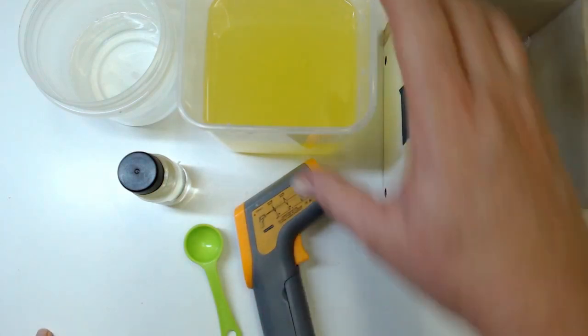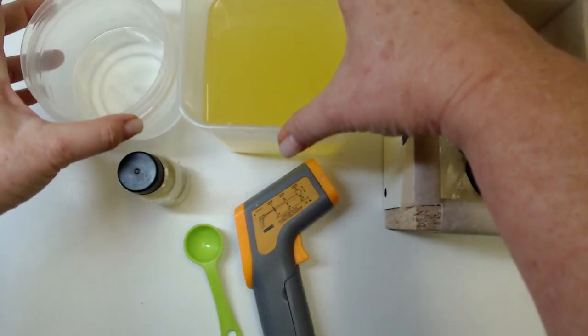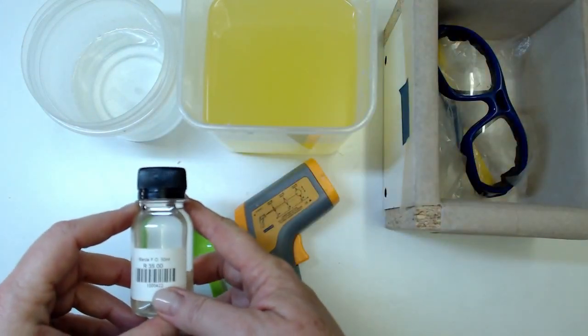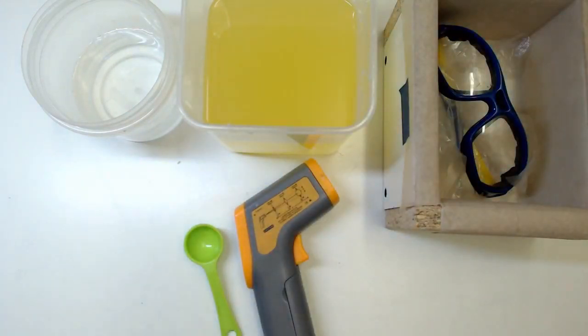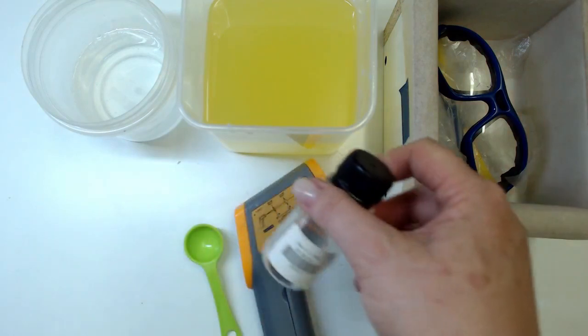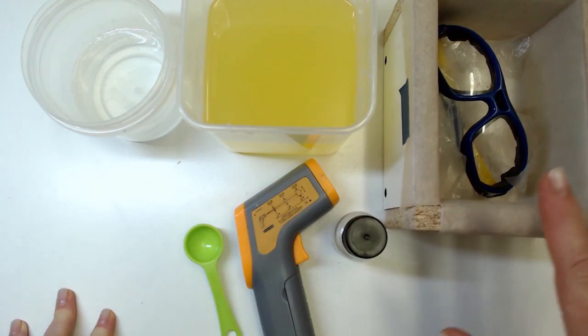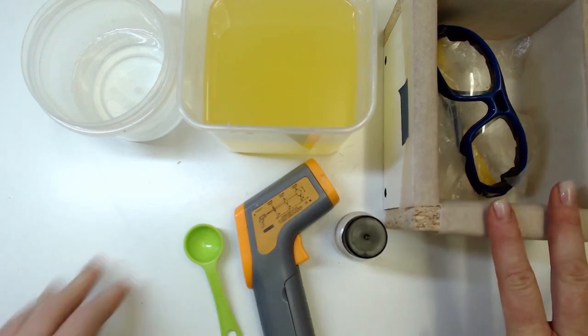But the coconut oil just boosts the bubbly a little bit and gets it to foam easier. Then I'm going to add a little bit of fragrance oil to it. I've got peppermint. Okay, I've got my little bit of peppermint oil here. This is a fragrance oil, not essential oil. This is for laundry so I'm not really too fussed about that.